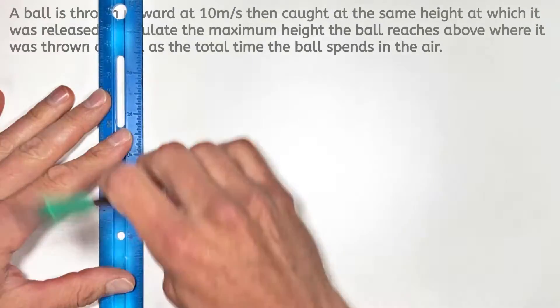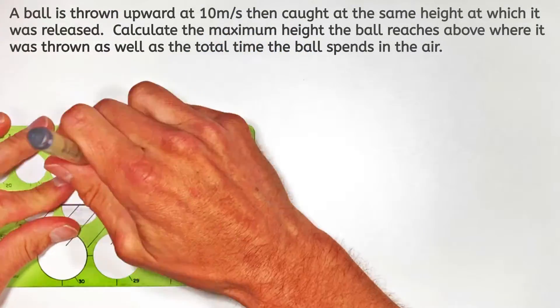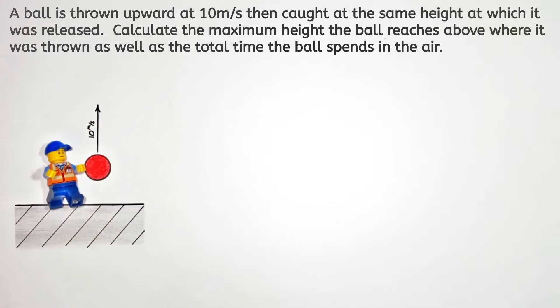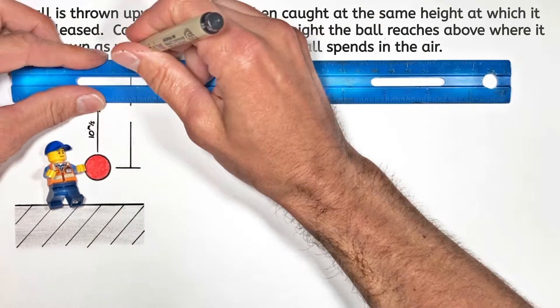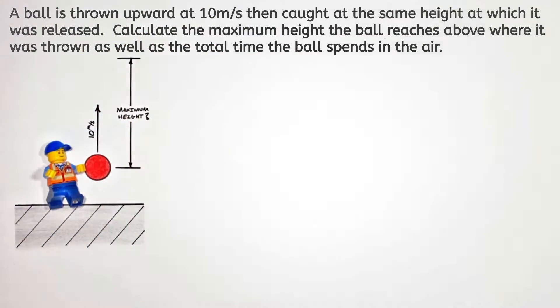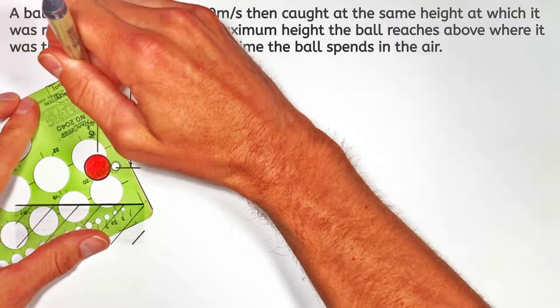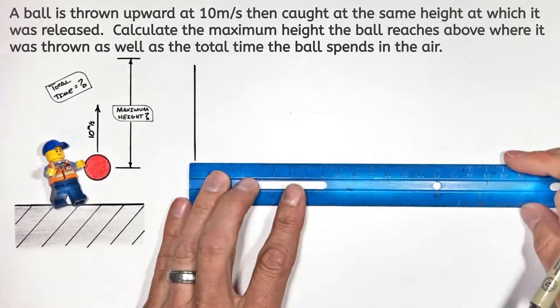YouTube, we're back and today our little Lego guy is gonna toss a ball up in the air at 10 meters per second. In this problem we're gonna solve for the maximum height the ball reaches above the ground as well as the total time the ball is gonna spend in the air.